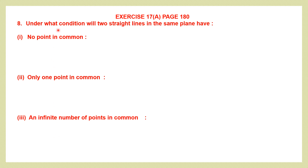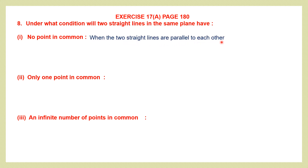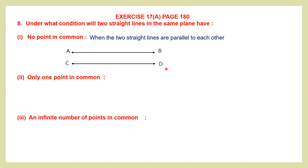Under what condition will two straight lines in the same plane have no point in common? When the two straight lines are parallel to each other, they will not have any point in common. We have also been asked to draw diagrams. So we have two parallel lines AB and CD, and as you can see, they have no point in common because they are not meeting each other.